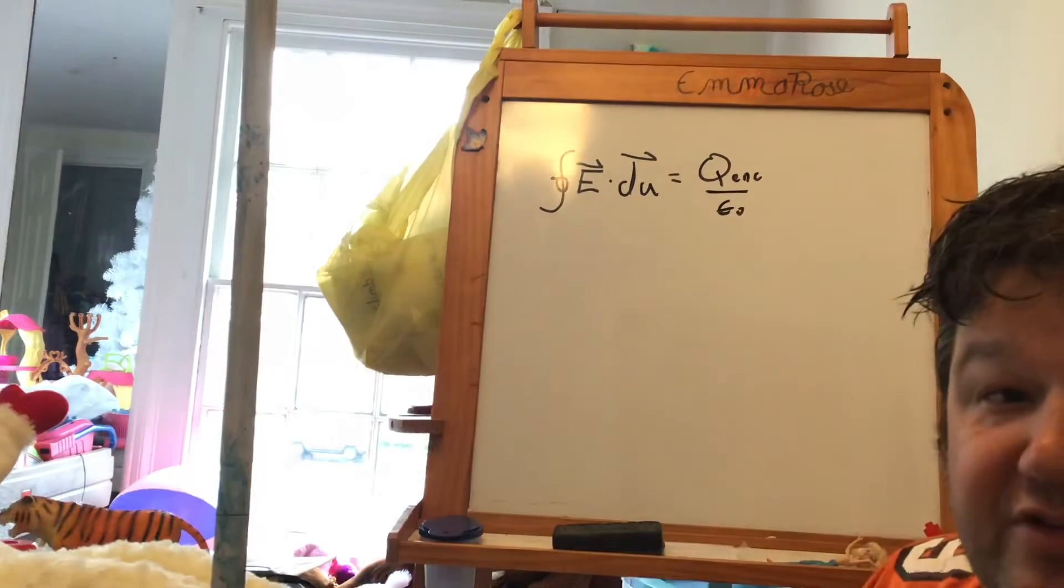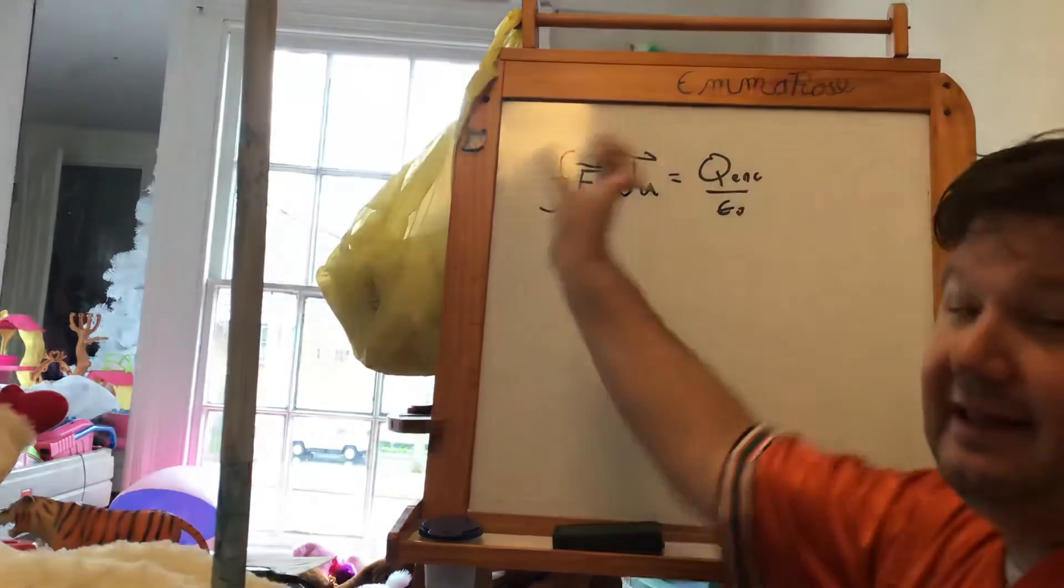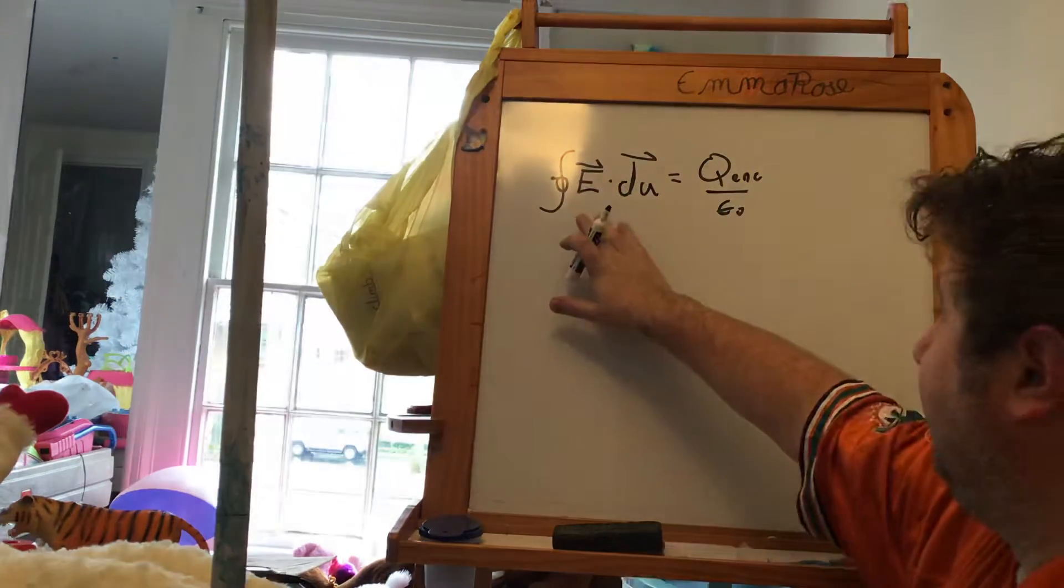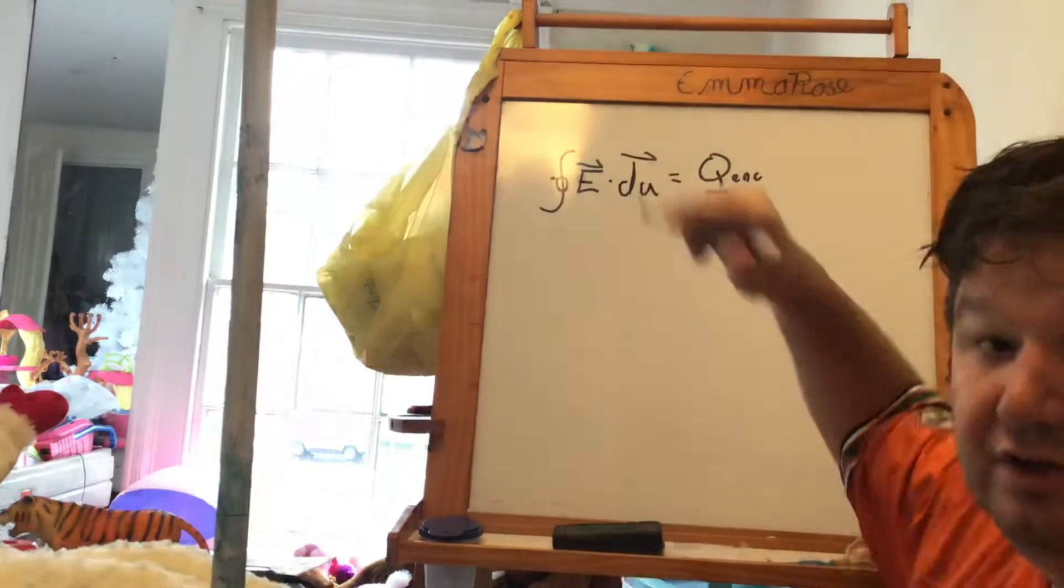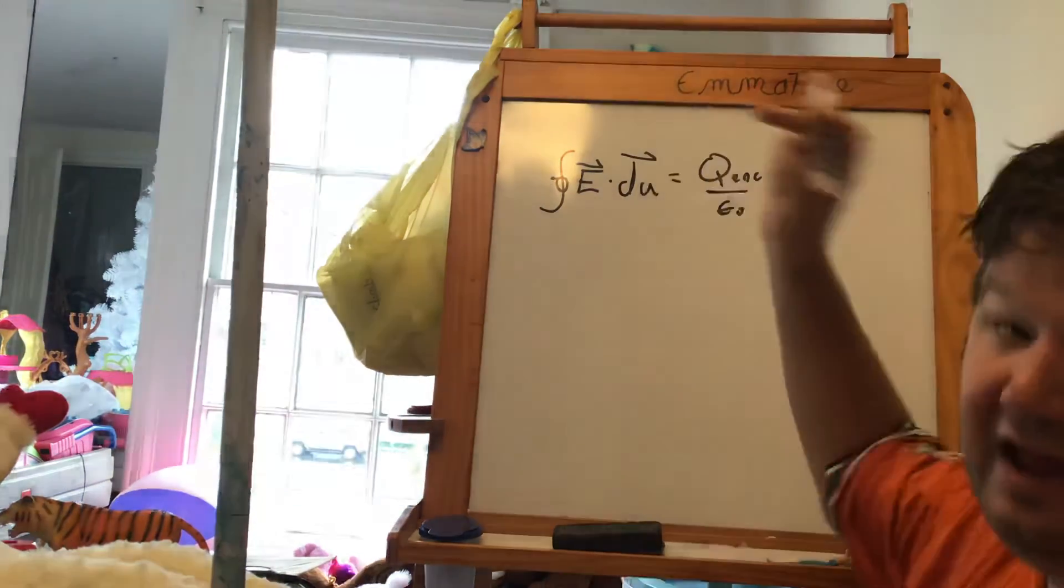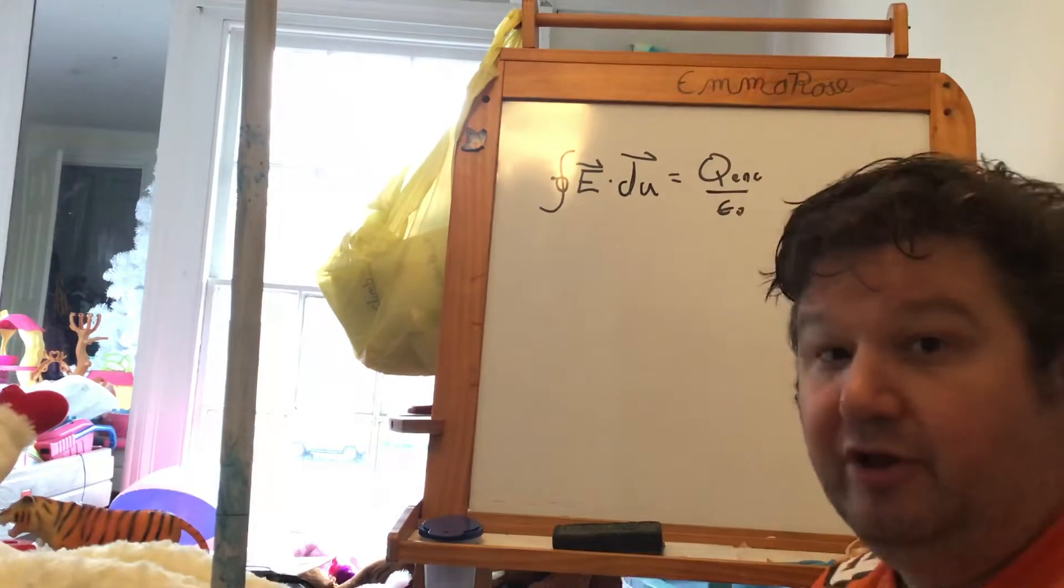So from physics two, we remember that Gauss's law is the integral around a closed surface of the electric field dotted into the area is equal to the charge enclosed over epsilon nought.